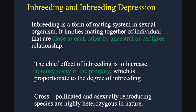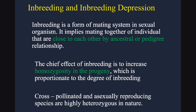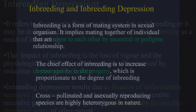Inbreeding is usually done in plants which undergo self-pollination, because in cross-pollinated and asexually reproducing species, they are highly heterozygous in nature. So to achieve homozygosity is very very difficult in these plants. This is what inbreeding is, and now let's see what is the effect of inbreeding on plants as well as other organisms.